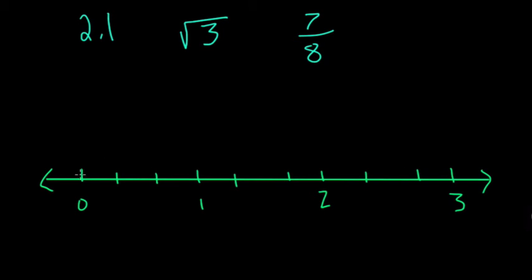Notice that we cut from 0 to 1, which gives us three segments between 0 and 1, so each one is a third. Here, this is a third, this is two-thirds, and one is three-thirds.